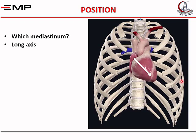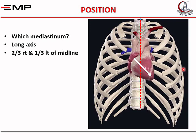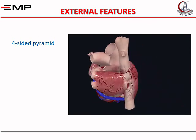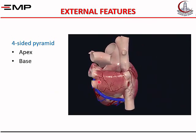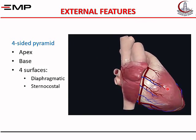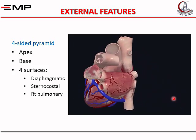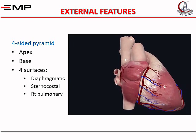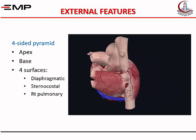The heart lies in the middle mediastinum. Its long axis is directed downwards, forwards, and to the left. Two-thirds of the heart lie on the left side of the midline, while only one-third is on the right side. The heart looks like a four-sided pyramid. It has an apex to the left and a base behind. It has four surfaces: a diaphragmatic surface below, sternocostal surface anteriorly, and right and left pulmonary surfaces — though these are really rounded borders rather than surfaces.